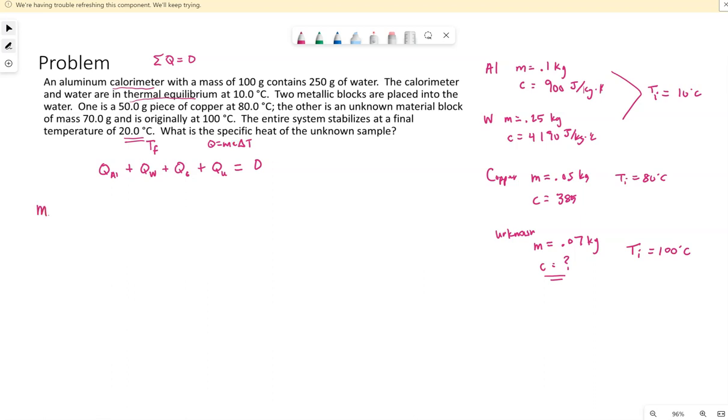We're going to have mass of the aluminum, C of aluminum, delta T for the aluminum, plus mass of the water, C of the water, delta T of the water, plus M of the copper, C of the copper, delta T of the copper, plus mass of this unknown material, we don't know what it's made of, C of this unknown material, delta T of this unknown material.